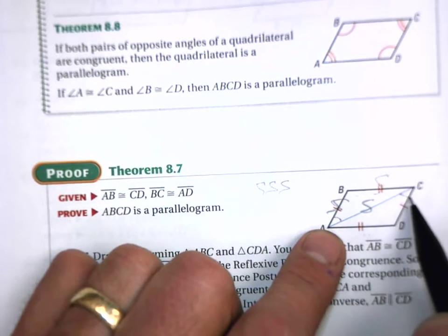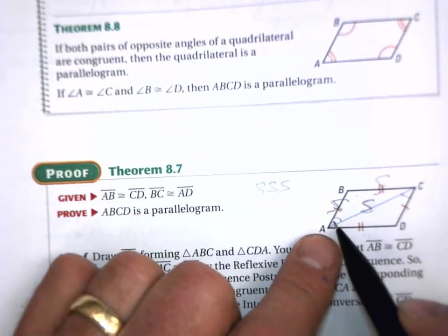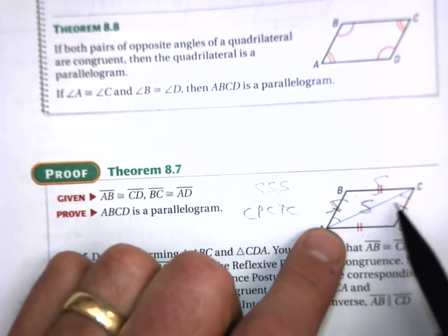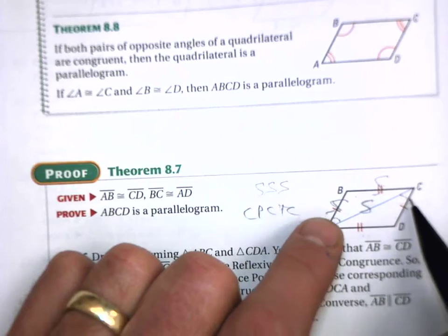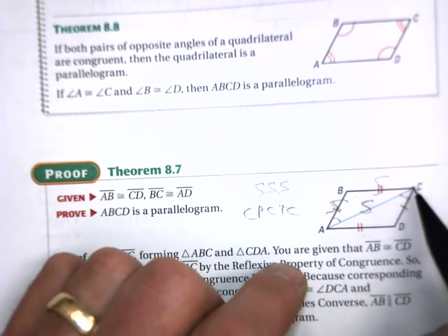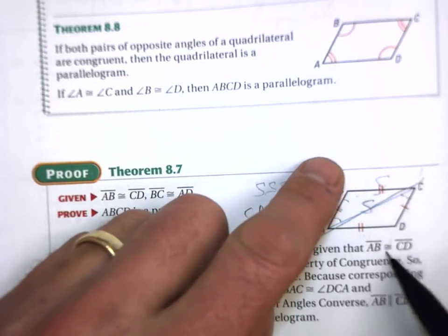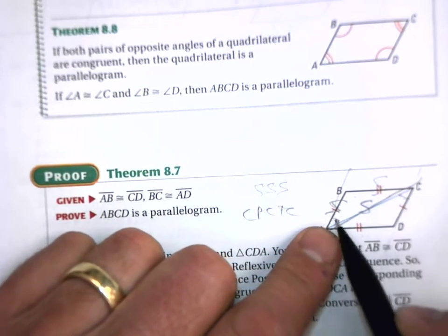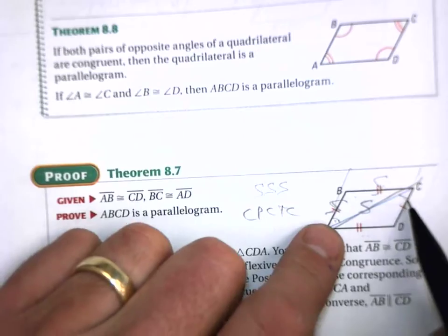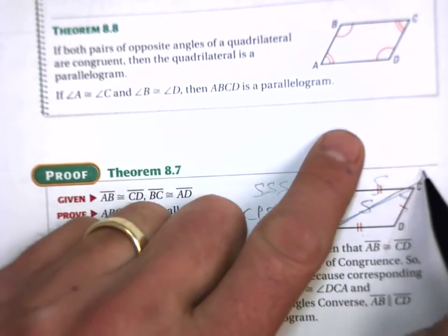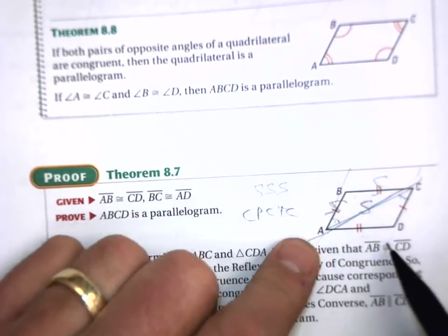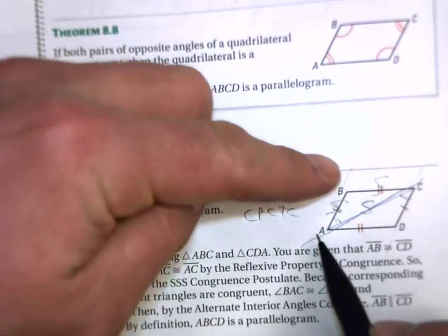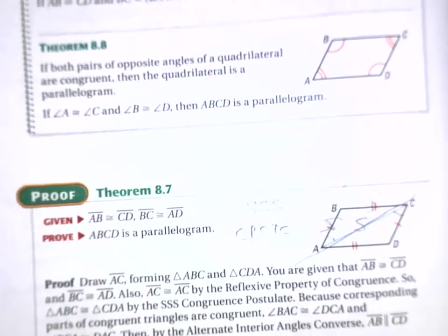Therefore, these angles will also be congruent by CPCTC — corresponding parts of congruent triangles are congruent. And because these angles, think of this diagonal as your transversal with the two lines on either side — these are alternate interior angles. When alternate interior angles are congruent, the two lines are parallel. So I've proved that those two lines are parallel, and I can do the same thing with the other two sides similarly.